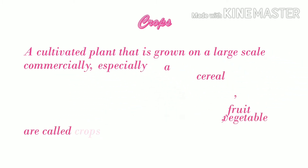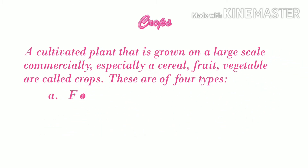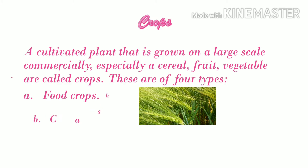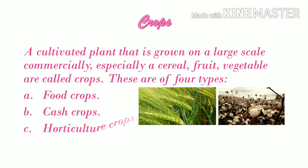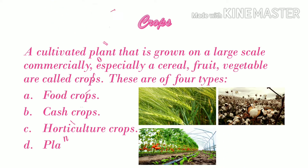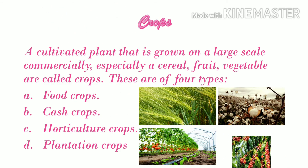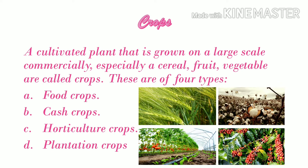Crops. A cultivated plant that is grown on a large scale commercially, especially a cereal, fruit, or vegetable, is called a crop. These are of four types: A. fruit crops, B. cash crops, C. horticulture crops, and D. plantation crops.